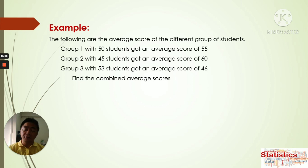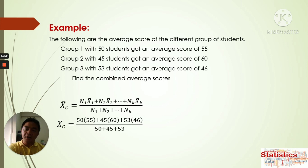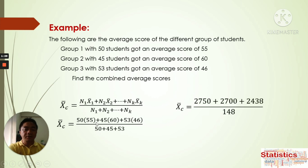Using the formula, the combined x-bar is equal to the sum of the products of each group's mean and number of respondents, divided by the total sum of respondents. Substituting: 50 × 55, plus 45 × 60, plus 53 × 46, giving us 2,750 plus 2,700 plus 2,438, divided by 148. We get a combined arithmetic mean of 53.3.